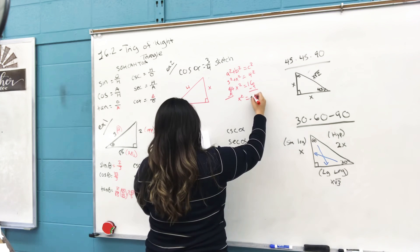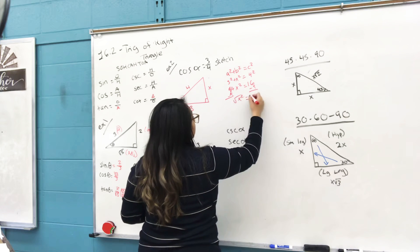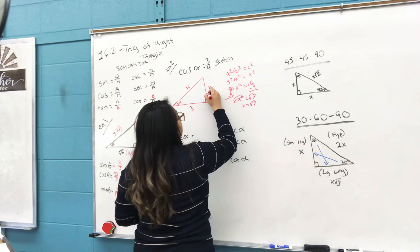Subtract both sides by 9. x² is equal to, I believe, 7. Yep, 7. And then you square root both sides and you get x is equal to √7.